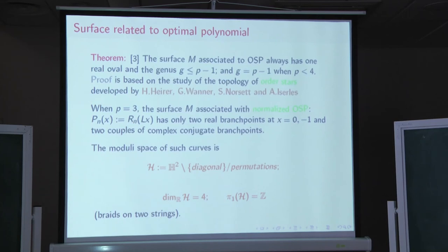So, one can show that the surface, the Riemann surface associated to optimal stability polynomials, it always has just one real oval. This is one of the topological invariants of real algebraic curves. And the genus is not greater than p minus 1. p is the order of touching. In fact, it is equal to the p minus 1, I believe. But one can prove it for only smaller values of p only. But actually, I think here it is an equality always. And the proof is based on certain study of topology of outer stars developed by those authors.